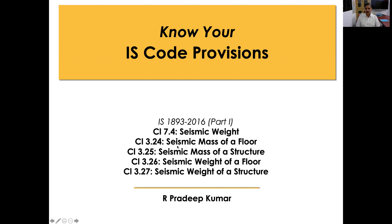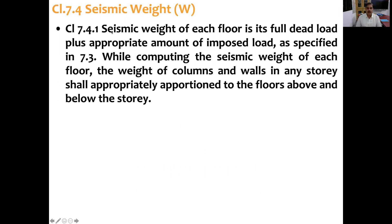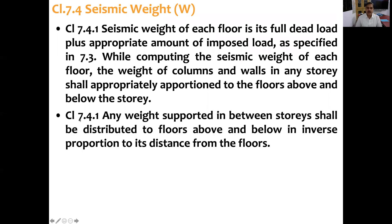Some definitions connected to this are: seismic mass of floor, seismic mass of structure, seismic weight of floor, and seismic weight of structure. Looking at Clause 7.4.1, what the code says is: seismic weight of each floor is its full dead load plus appropriate amount of imposed load as specified in Clause 7.3. While computing the seismic weight of each floor, the weight of columns and walls in any story shall be appropriately apportioned to the floors above and below the story. Clause 7.4.2 states: any weight supported in between stories shall be distributed to floors above and below in inverse proportion to its distance from the floors.